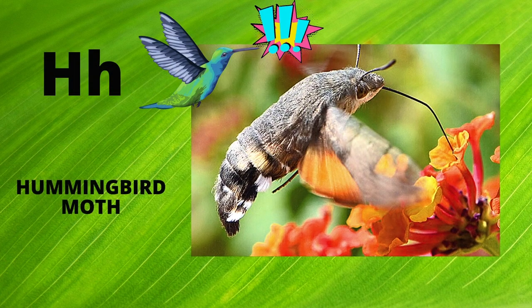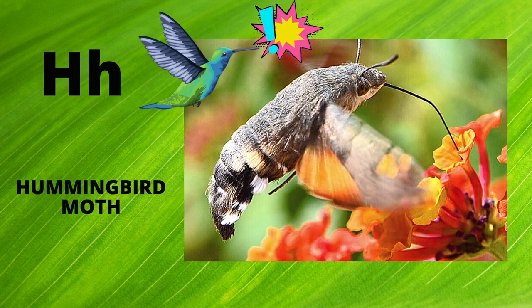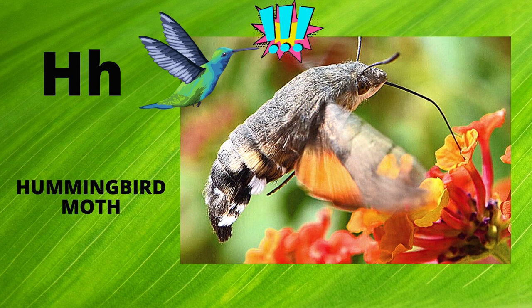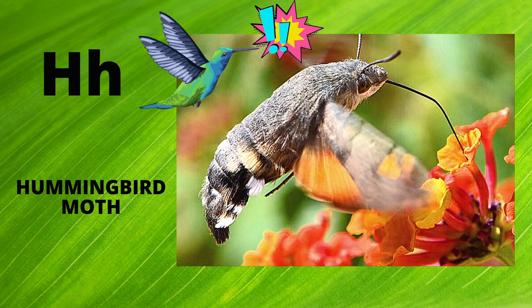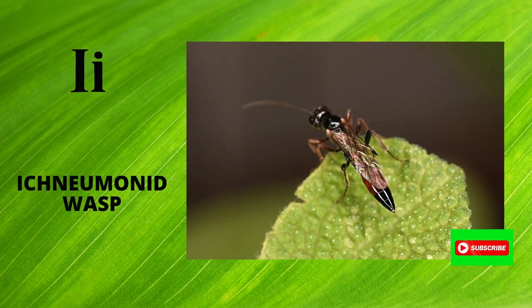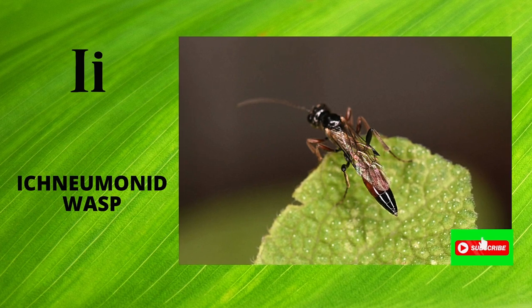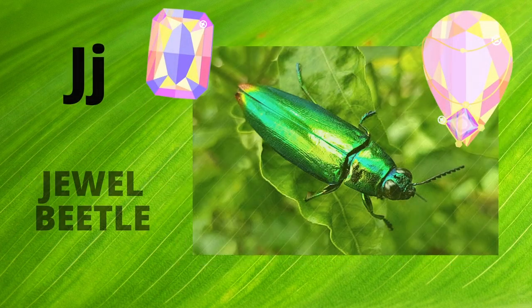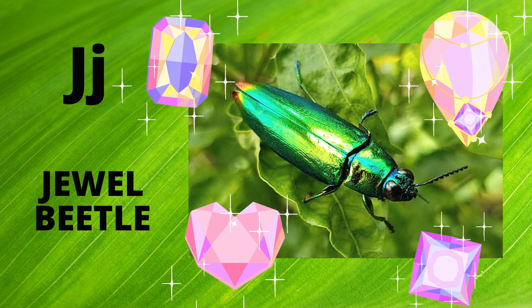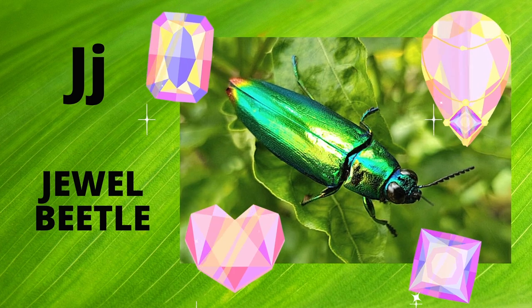H is for Hummingbird Moth. H. Hummingbird Moth. I is for Ichneumonid Wasp. I. Ichneumonid Wasp. J is for Jewel Beetle. J. Jewel Beetle.